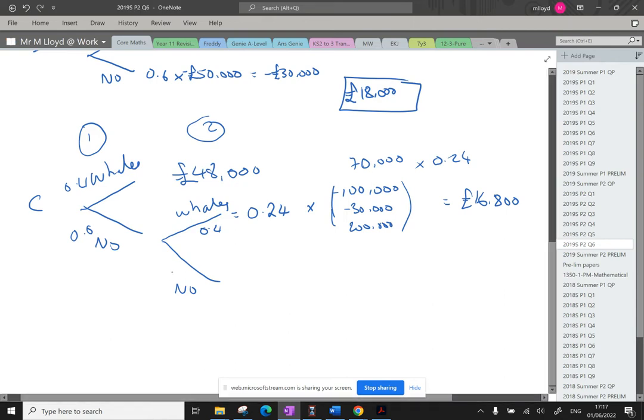And then the no-no bit. No-no is 0.36 multiplied by the cost, which is going to be £100,000 because that's all we've got cost-wise. The whales didn't turn up on this scenario. I don't have to film them. And then that is going to be negative £36,000.